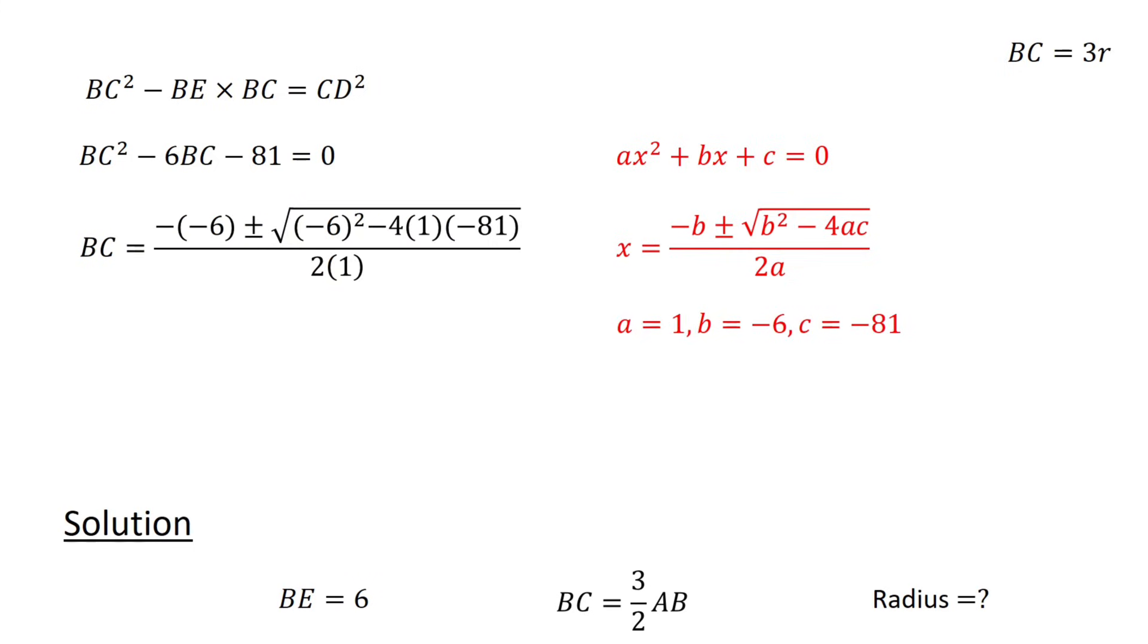An application of the quadratic formula, with A equals 1, B equals minus 6, and C equals minus 81, gives us BC equals 3 plus 3 square root 10, or 3 minus 3 square root 10. Since BC is positive, we have BC equals 3 plus 3 square root 10.